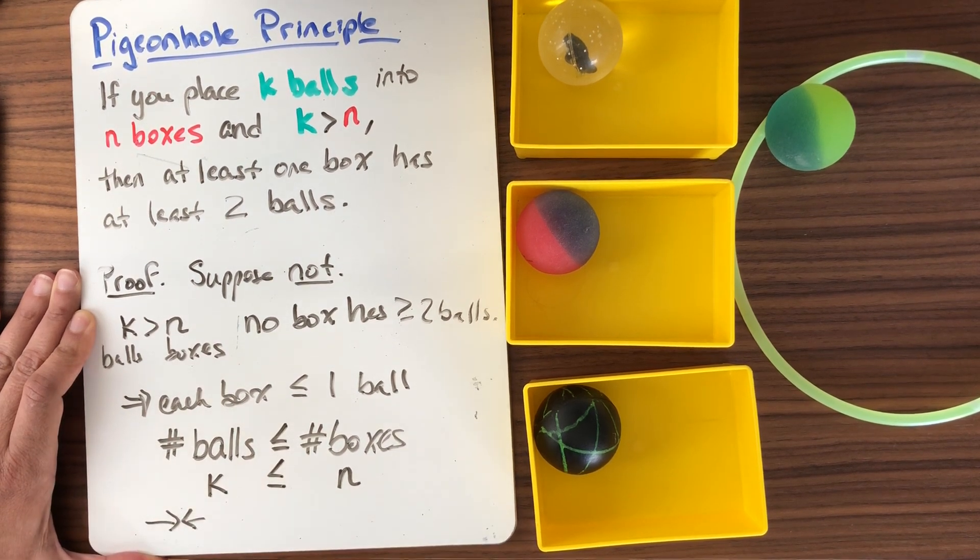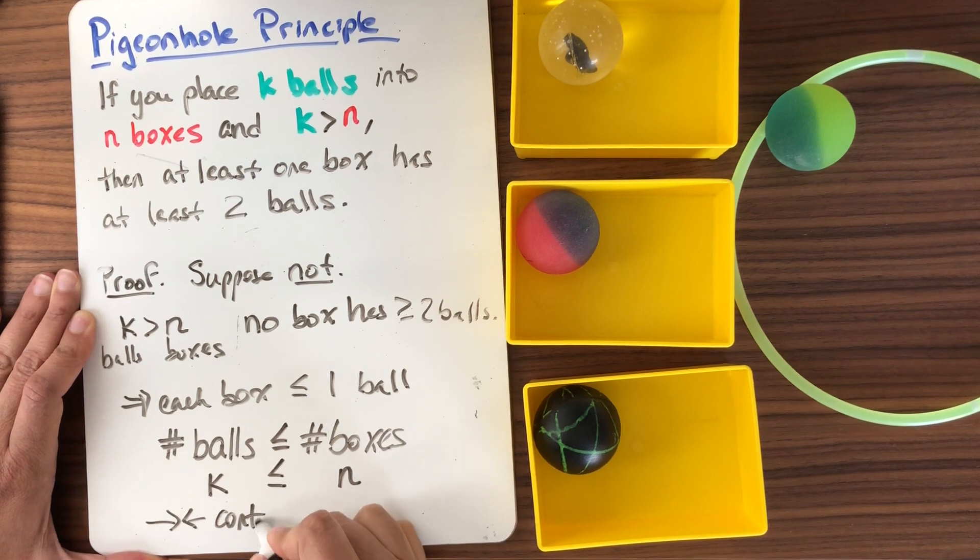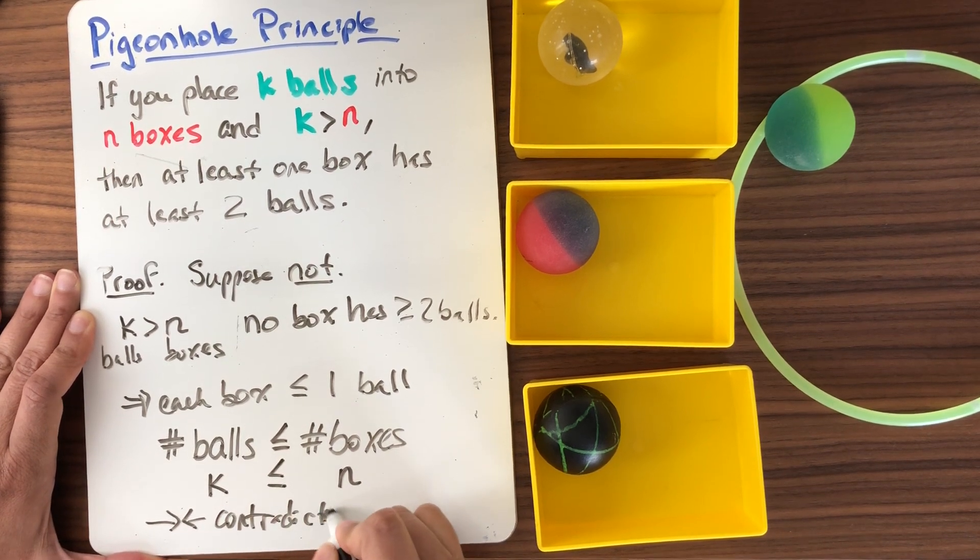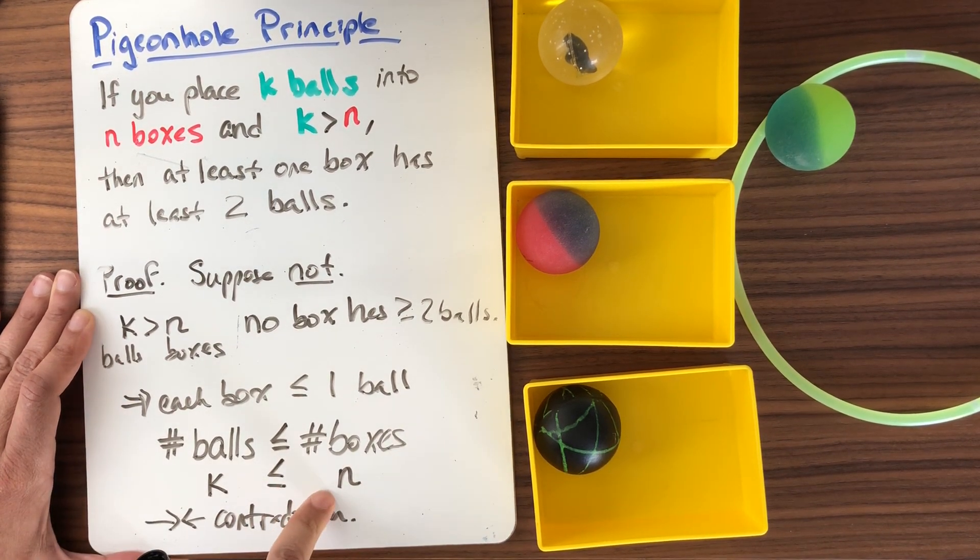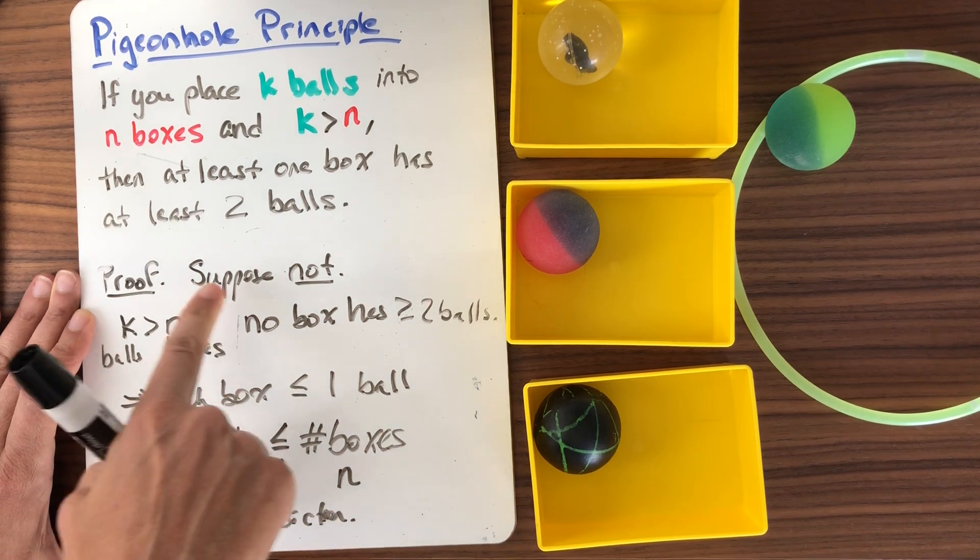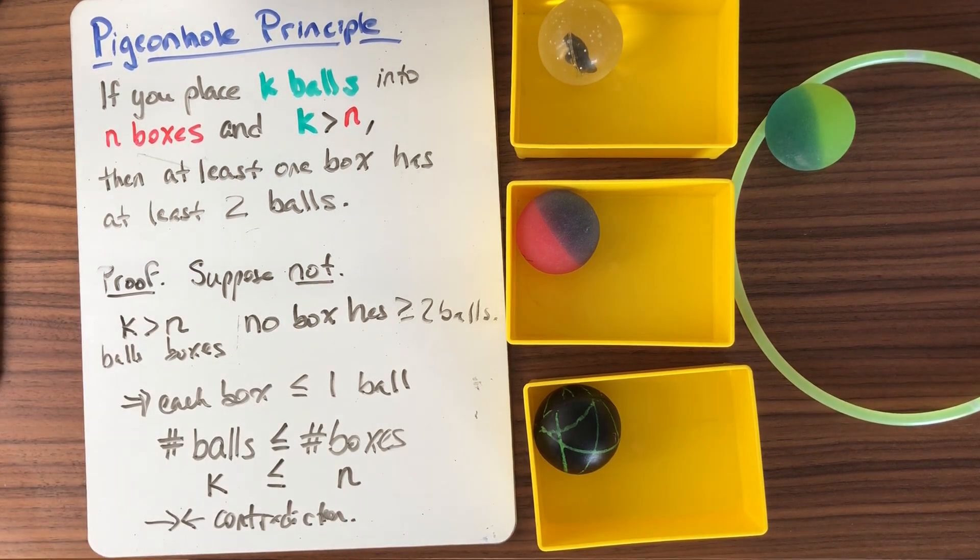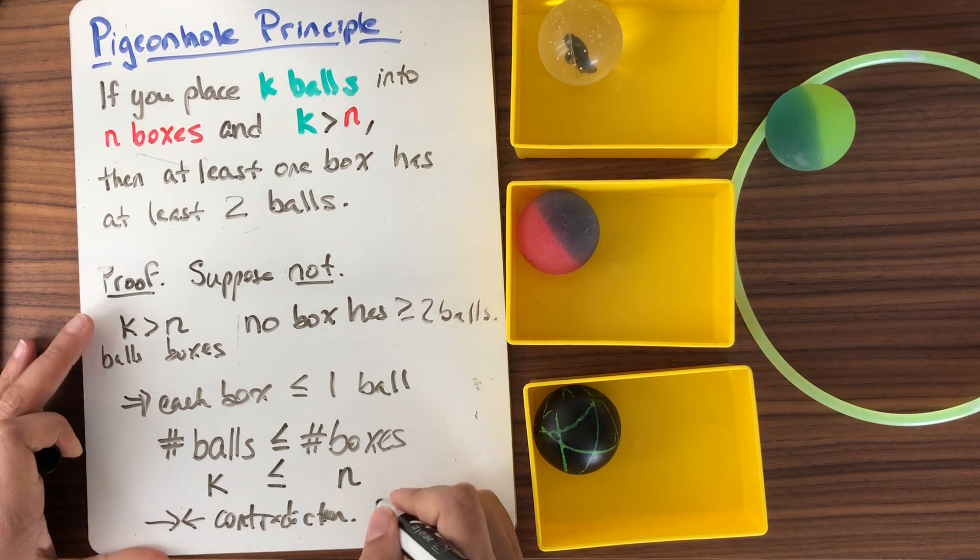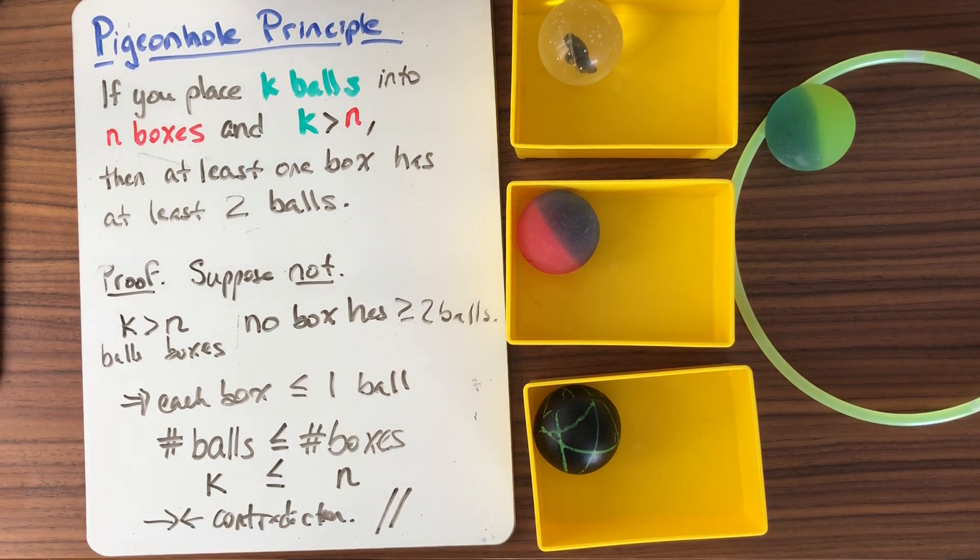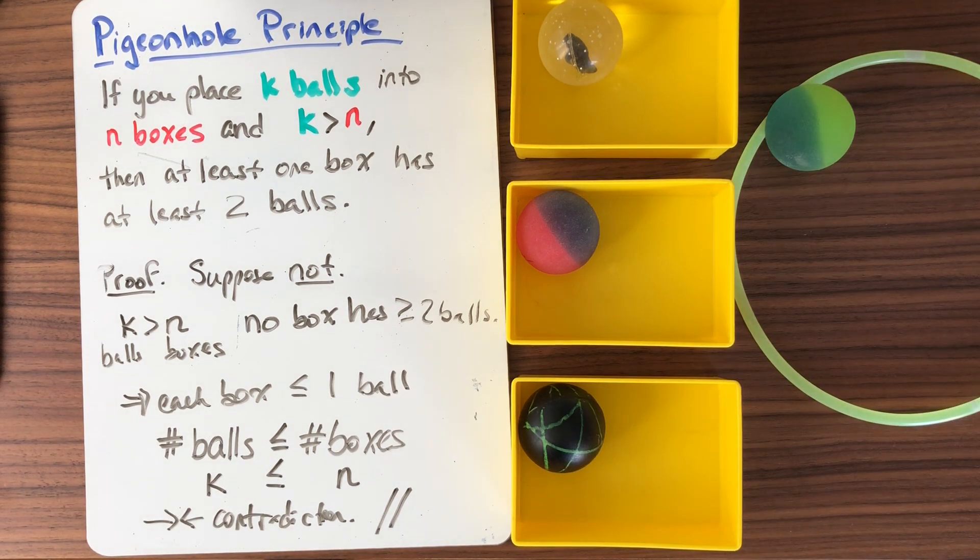Usually we denote it like this. So here is a contradiction. If you arrive at a contradiction, two statements that cannot simultaneously be true, then your supposition is false. So it's not true that not is the case. Therefore, it is true that the pigeonhole principle is the case. So this is a great example of a proof by contradiction for something, a statement that's pretty obvious.